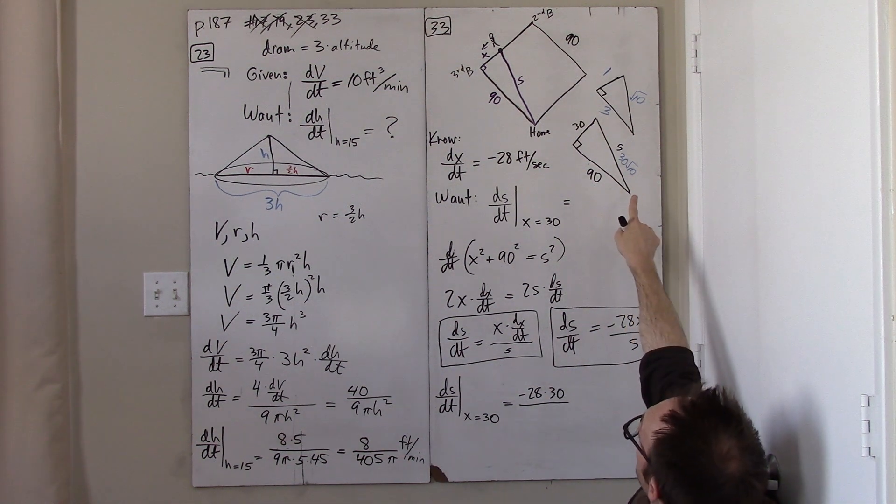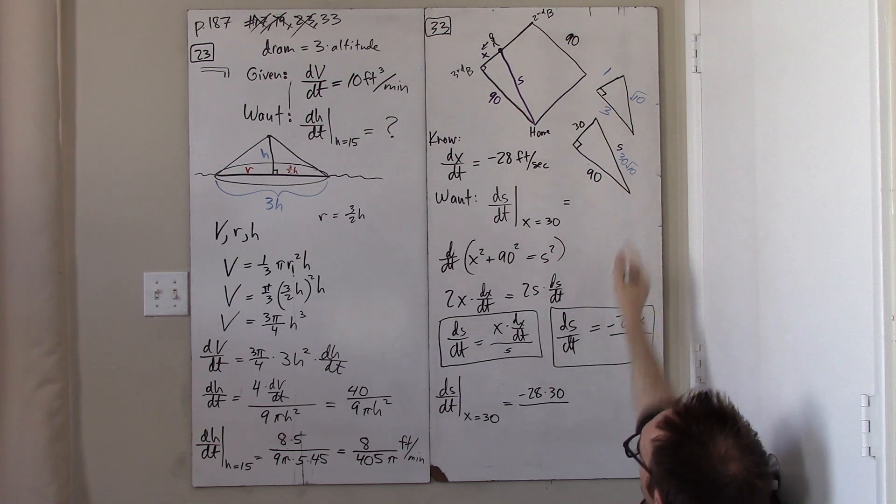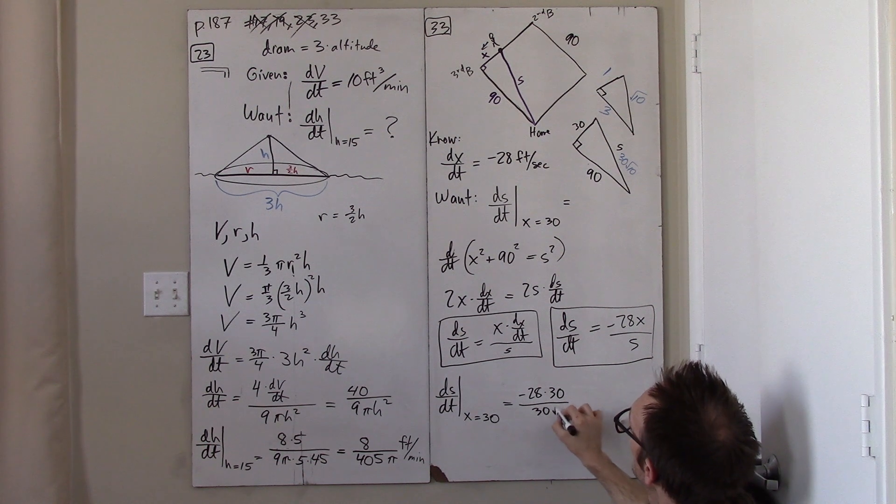What is s when x is 30? That's what we just calculated. When x is 30, s is 30 root 10.